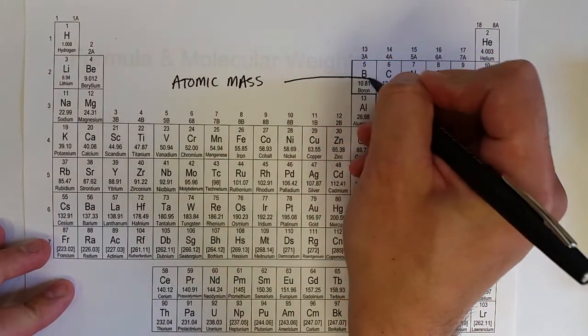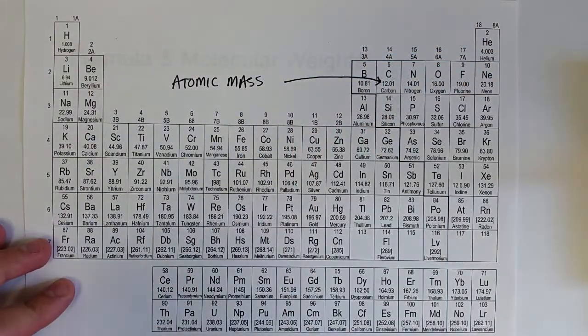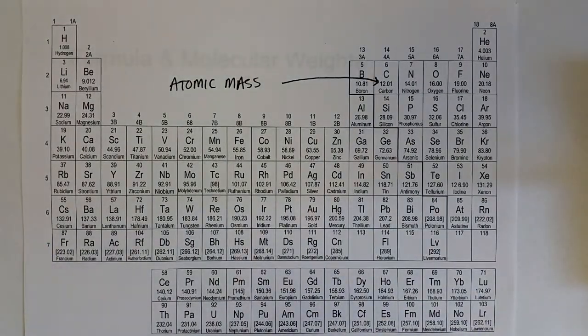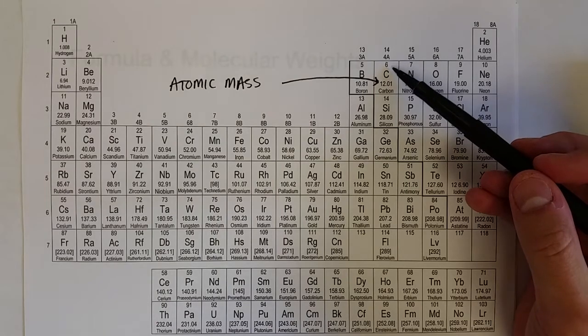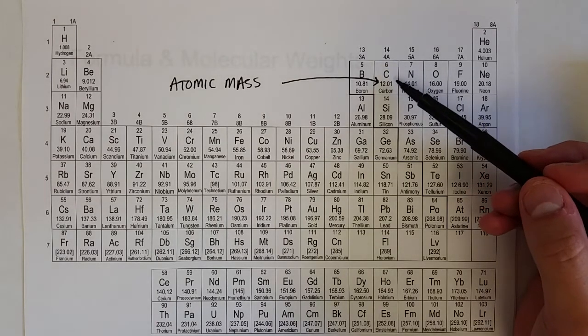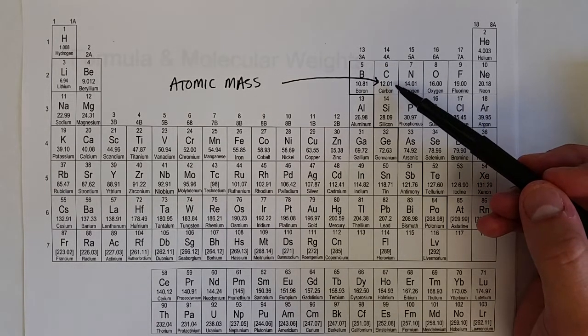This can be found right here on most periodic tables. It's the number with the decimal value. The integer value is the atomic number, which is the number of protons. The value with decimals is the atomic mass.